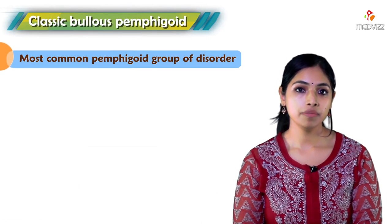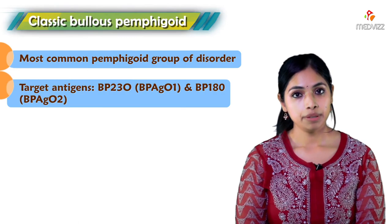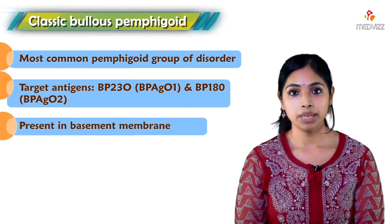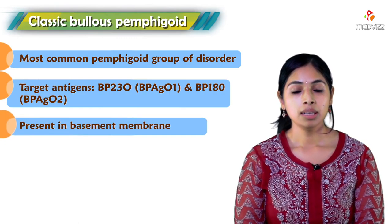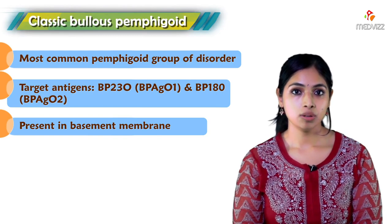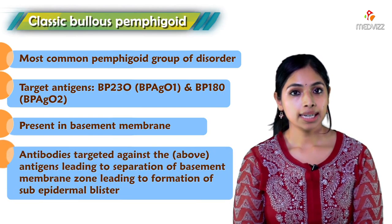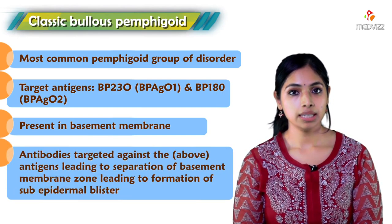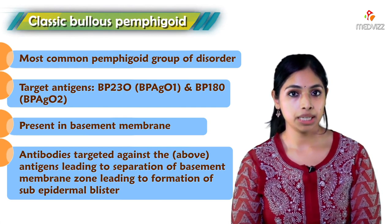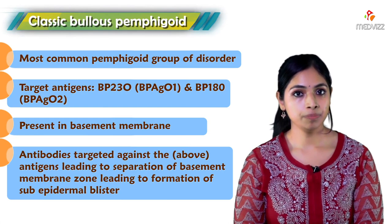In bullous pemphigoid, the target antigens are BP-230 and BP-180, which are present in the basement membrane. BP-230 is also known as BP-AG-1 and BP-180 is also known as BP-AG-2. Because there are autoantibodies targeted against these antigens, this leads to separation of the epidermis from the underlying basement membrane zone, resulting in the formation of a sub-epidermal blister.